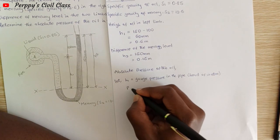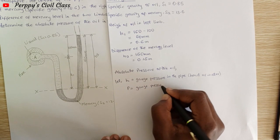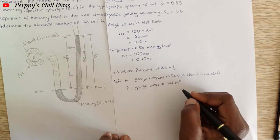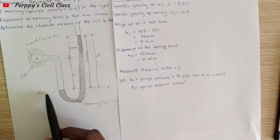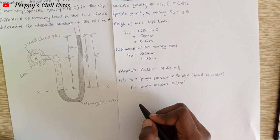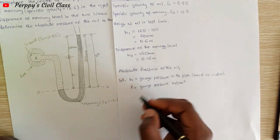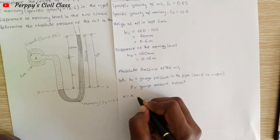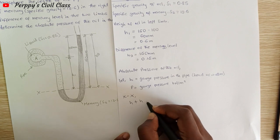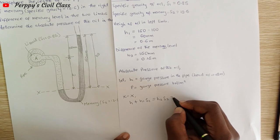We have a section here XX, the datum line. Equating the pressure head above the section line or datum line XX, we have h plus h1·S1 equals h2·S2, which equals zero.